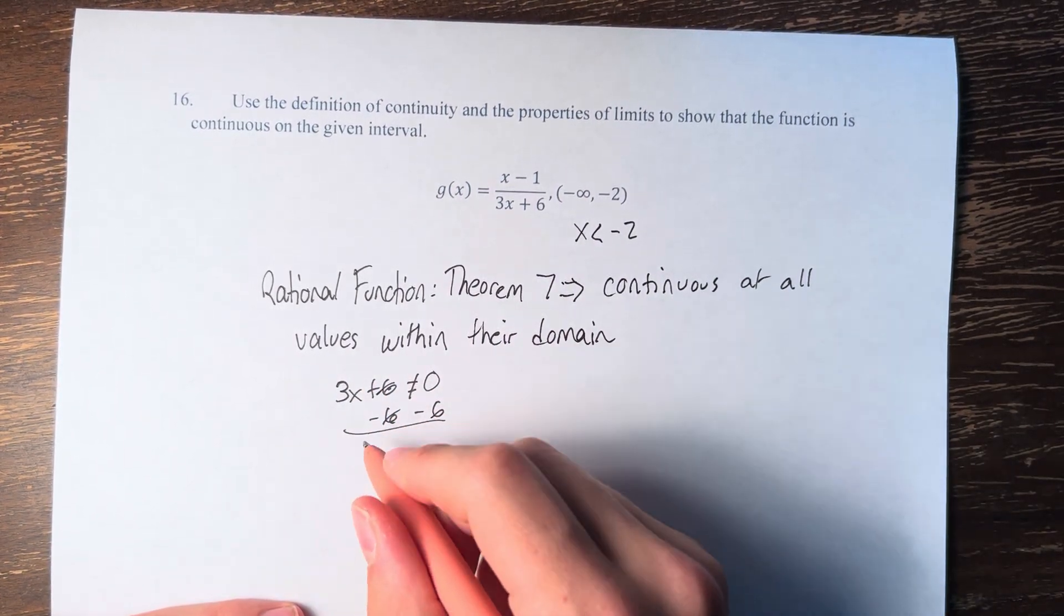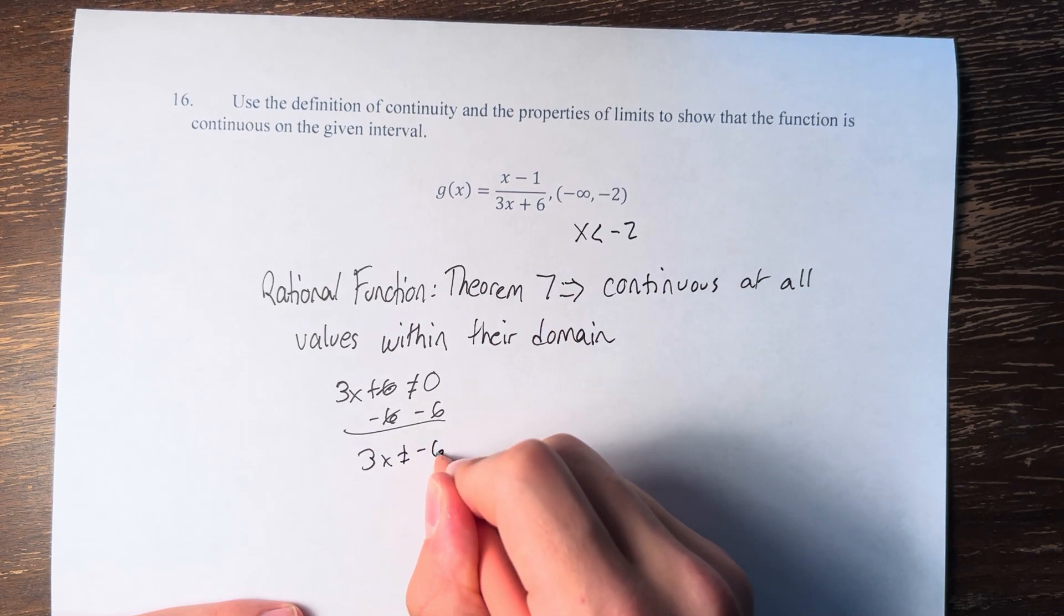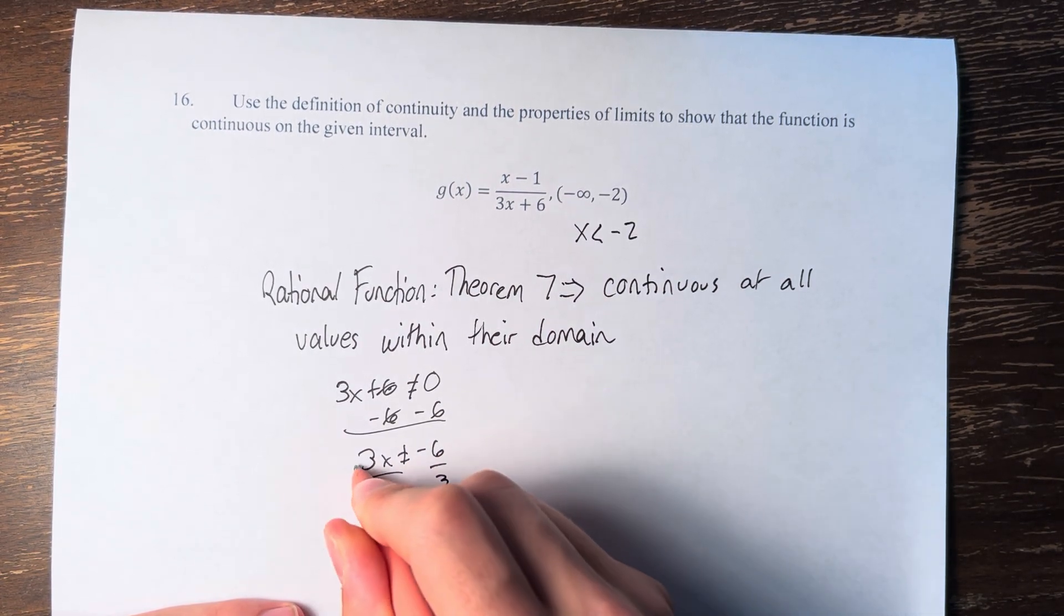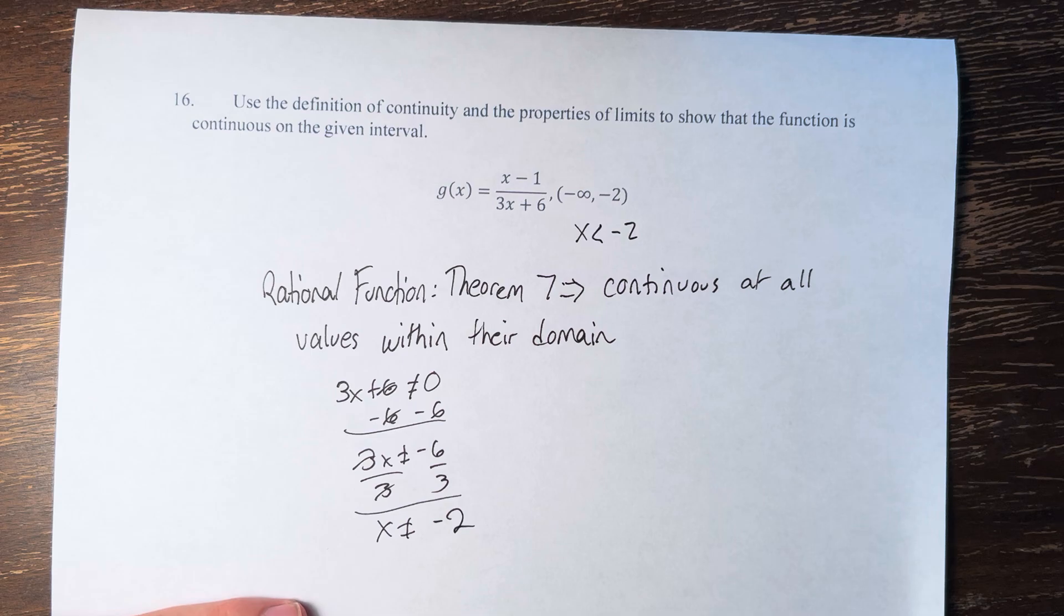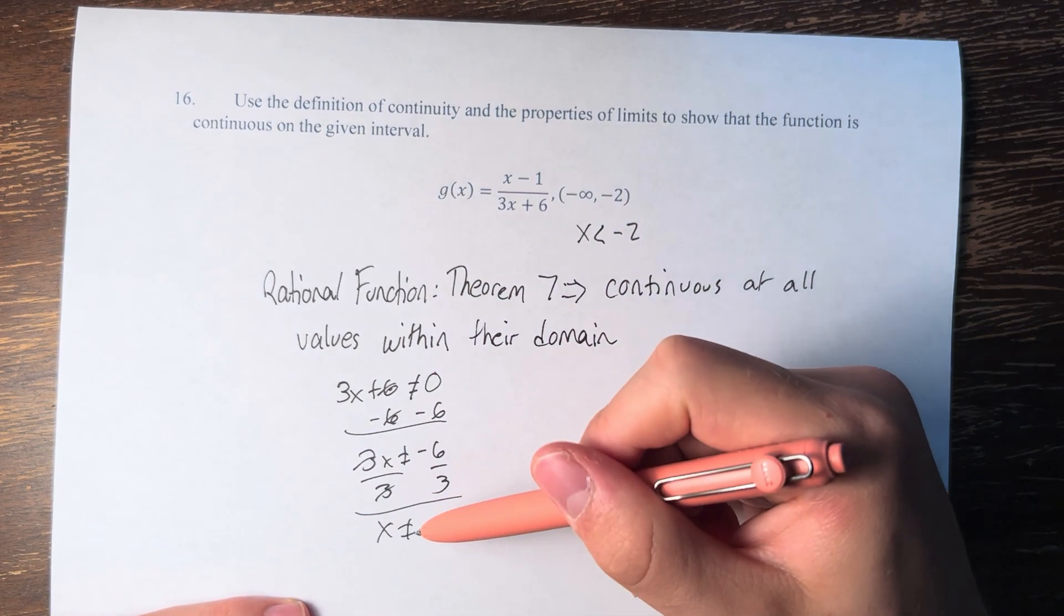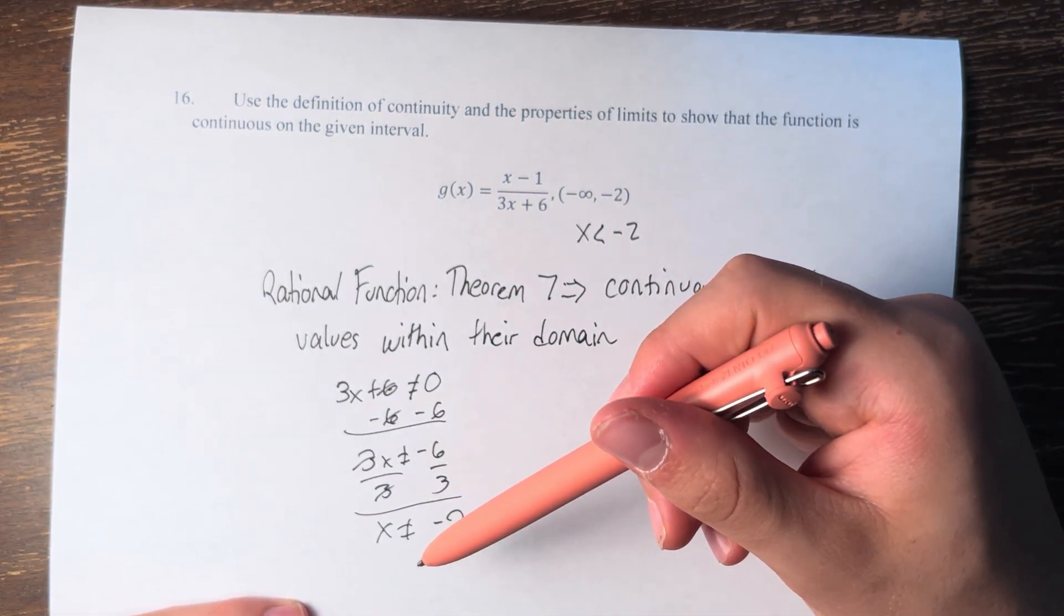Therefore, when we solve for x and get that x is not equal to negative 2, this is the only point where the function is not continuous.